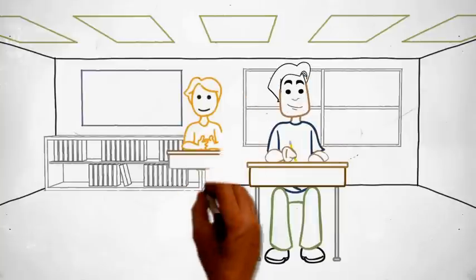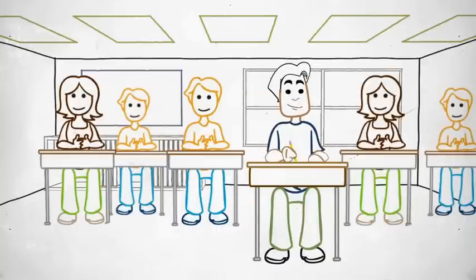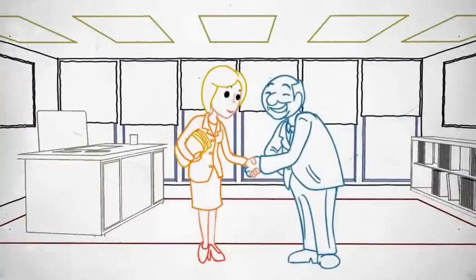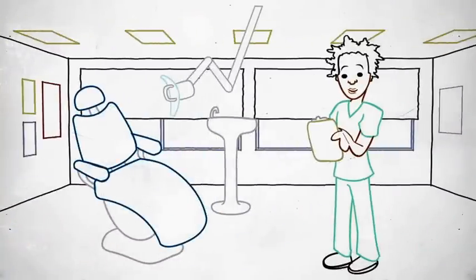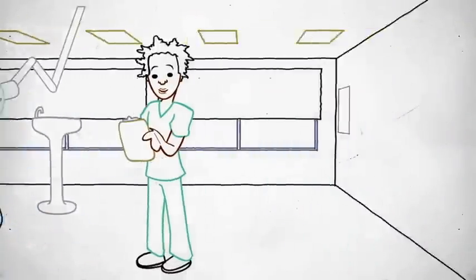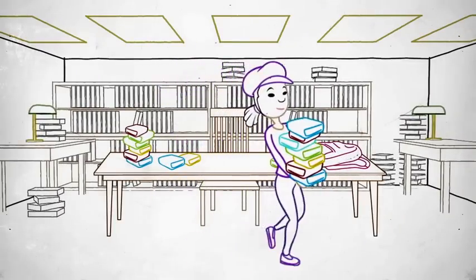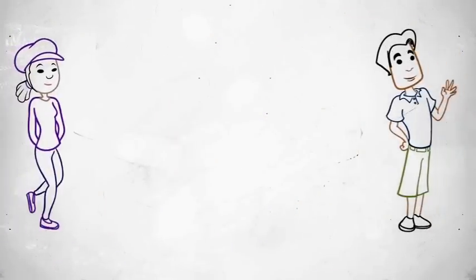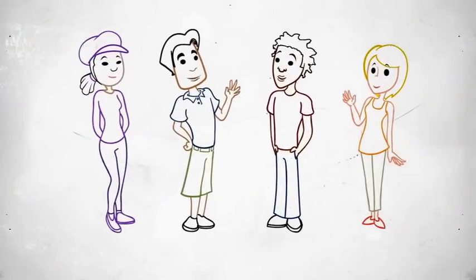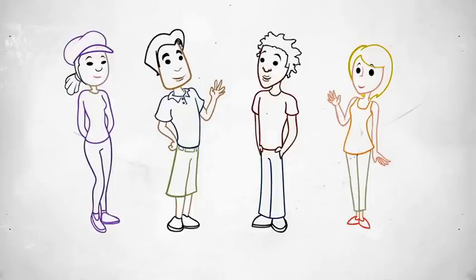Four years later, Luke takes some business courses at a community college. Simone accepts a position at a company halfway across the state, Dante is in the workforce with his bachelor's degree, and Viviana is on a path toward earning her doctorate. Four very different paths for four very different students, all of whom started in the very same place.